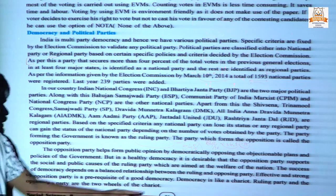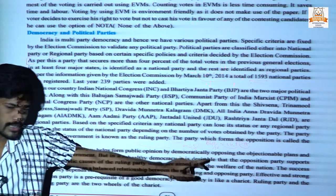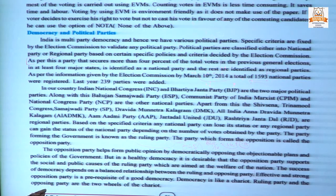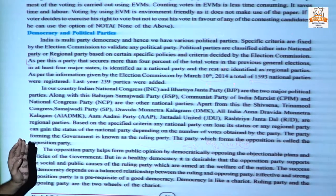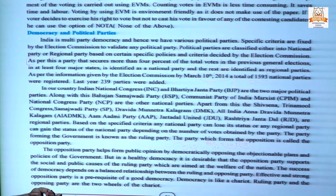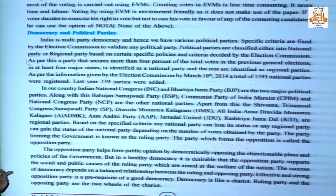The success of democracy depends on a balanced relationship between the ruling and opposition party. An effective and strong opposition party is necessary for the government to run effectively. Democracy is like a chariot — the ruling party and the opposing party are the two wheels of the chariot, making it run in a strong and effective manner.